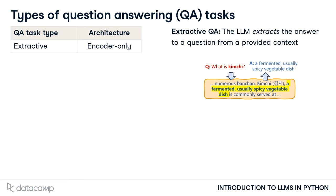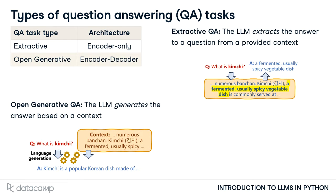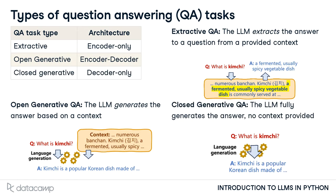In open generative QA, the model constructs the answer using language generation based on the context, rather than extracting it. This relies on an encoder-decoder approach. In closed generative QA, the model generates the answer based on its knowledge without any context. This relies on decoder architecture.